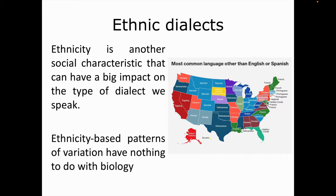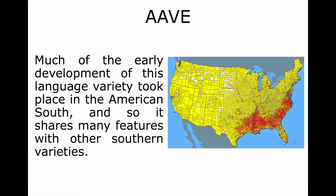Evidently, another social characteristic that can have a big impact on the type of dialect we speak is ethnicity. Here I'd like to emphasize that ethnicity-based patterns of variation have nothing to do with biology. Just as a child of French descent who is raised in Japan by Japanese-speaking caregivers will speak Japanese rather than French, so too a child of African-American descent raised in a white family in a primarily white neighborhood will speak a white rather than African-American variety.